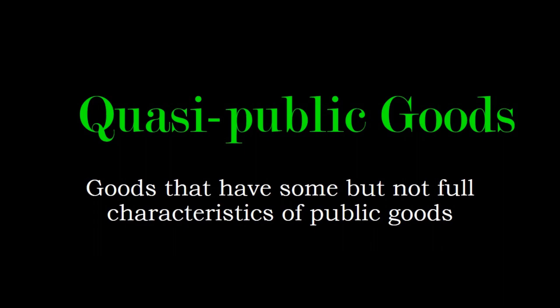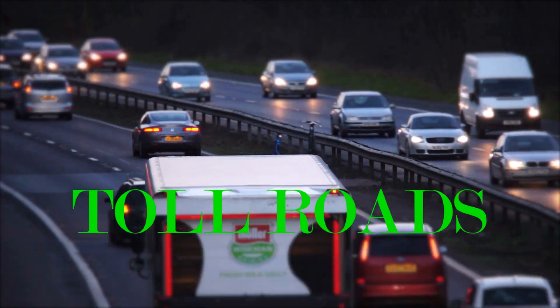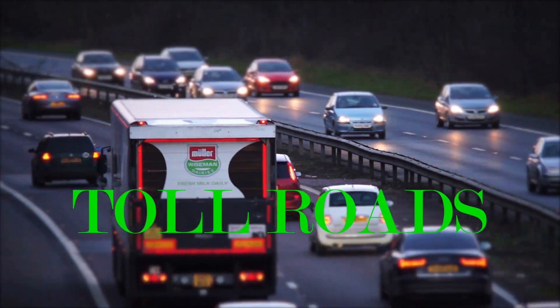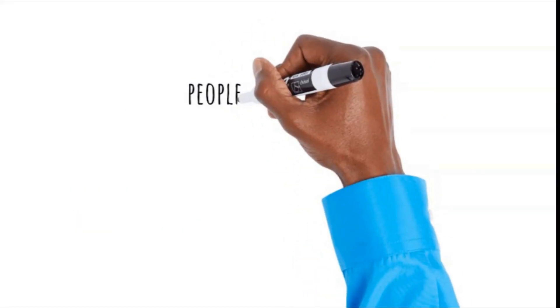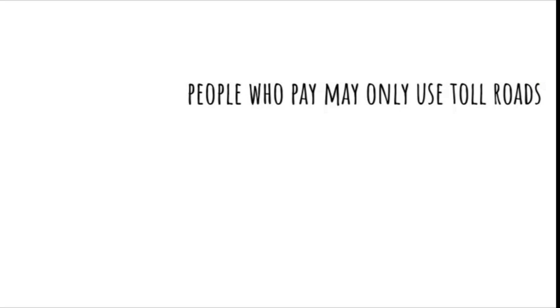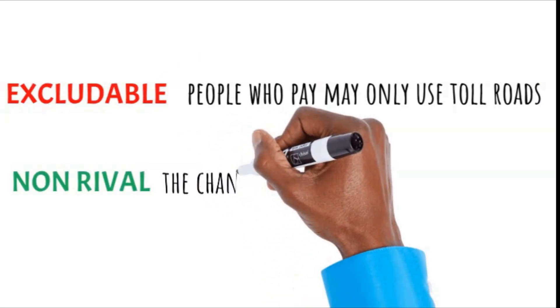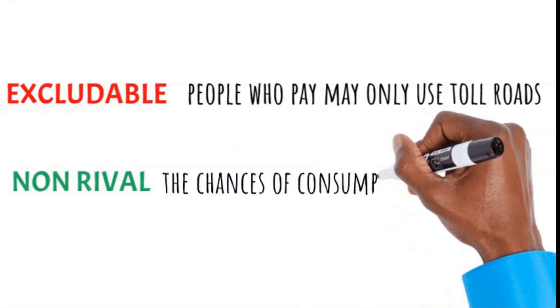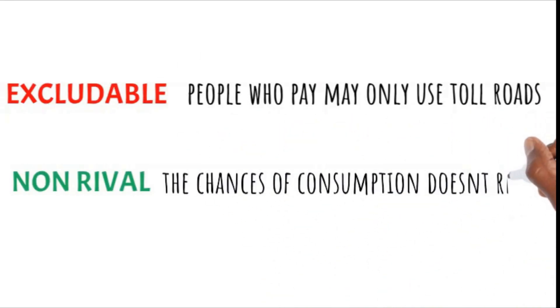Quasi-public goods are goods that have some, but not full, characteristics of public goods. Another example of quasi-public goods is toll roads. People who pay for the road may use it, which makes toll roads excludable. However, it is non-rival, as it doesn't reduce another traveler's chance from using it.